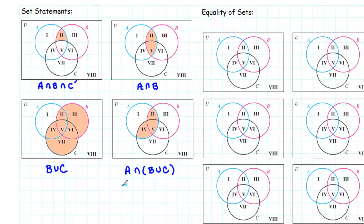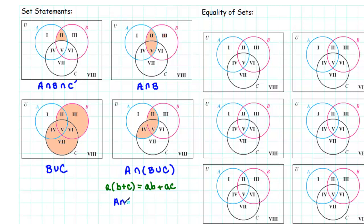This looks kind of similar to something we saw in algebra. What if we had A multiplied by B plus C? We could use the distributive property to rewrite that as AB plus AC — multiplication is distributive over addition. So we might ask ourselves: if we have a set statement, is intersection distributive over union? In other words, can we rewrite A intersect (B union C) as (A intersect B) union (A intersect C)?